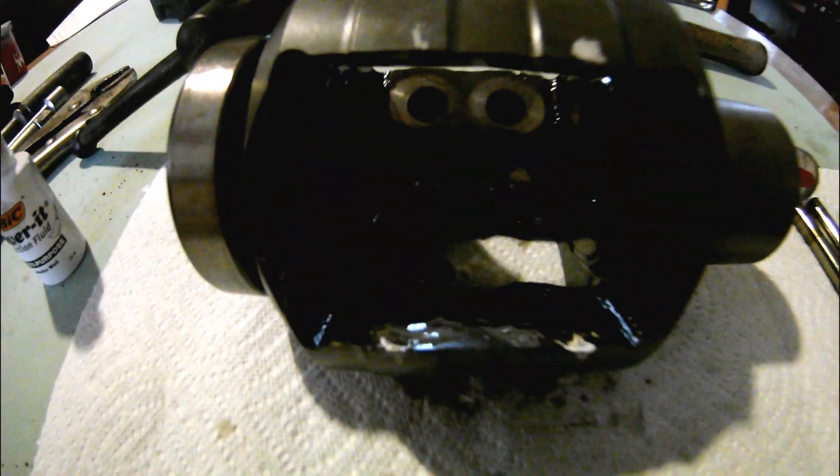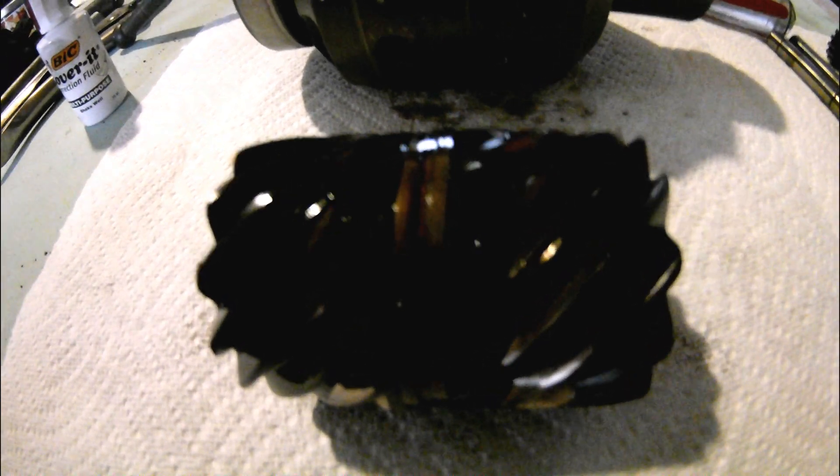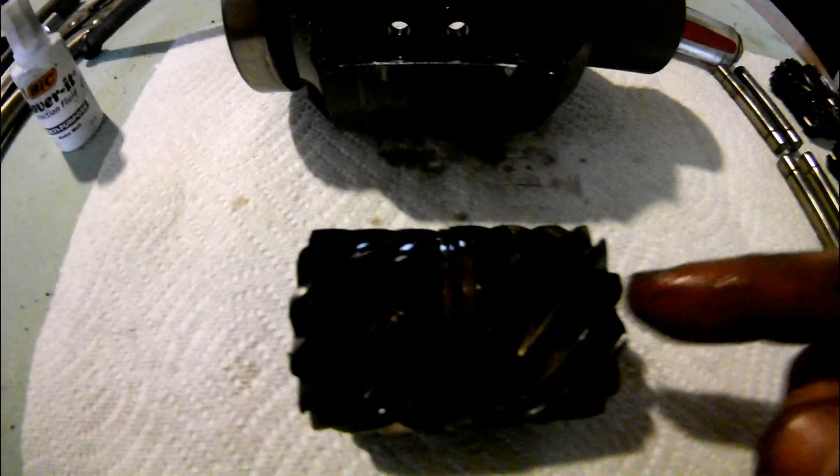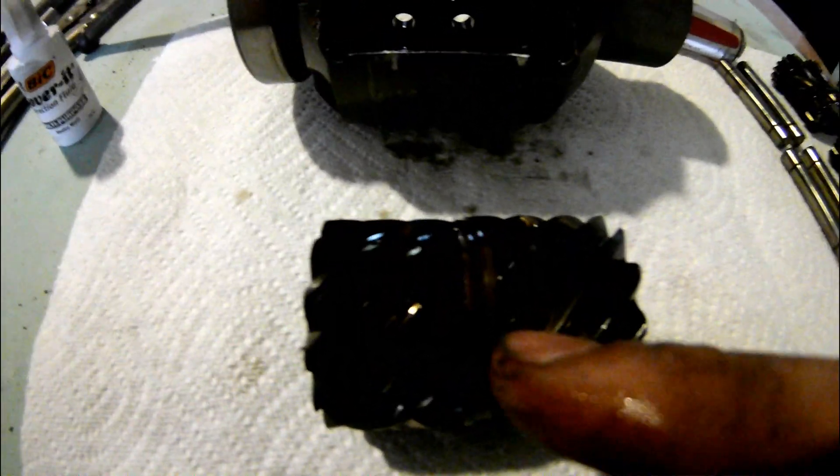So here it is completely disassembled. I got the center stack of gears out. I kept them in the same orientation. This gear is on this side and this gear is on this side and there's washers in between them.